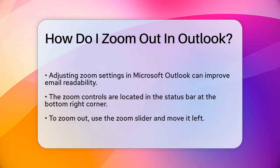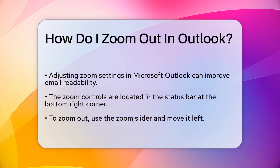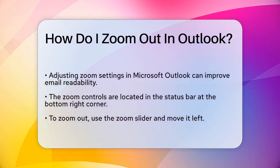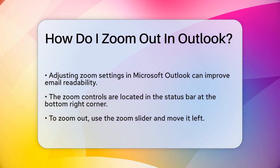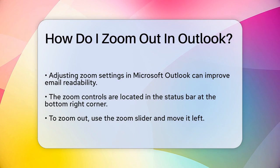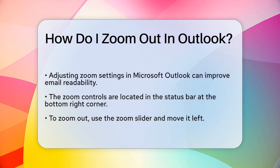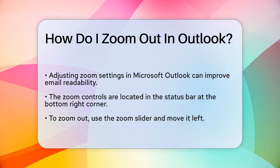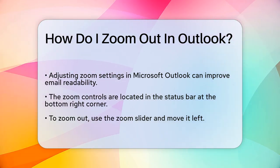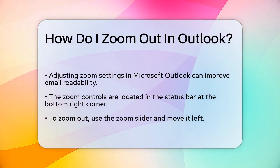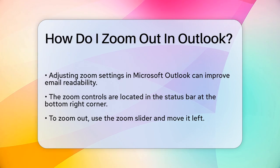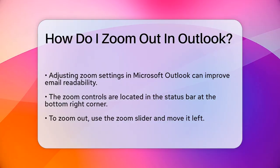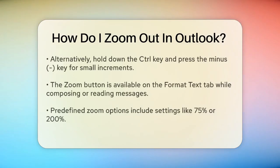In Outlook, you can adjust the zoom level for the reading pane and the new message window. Here's how you can do it. To zoom out, you can use the zoom slider located in the status bar at the bottom right corner of the Outlook window. Simply click on the slider and move it to the left to reduce the zoom level.